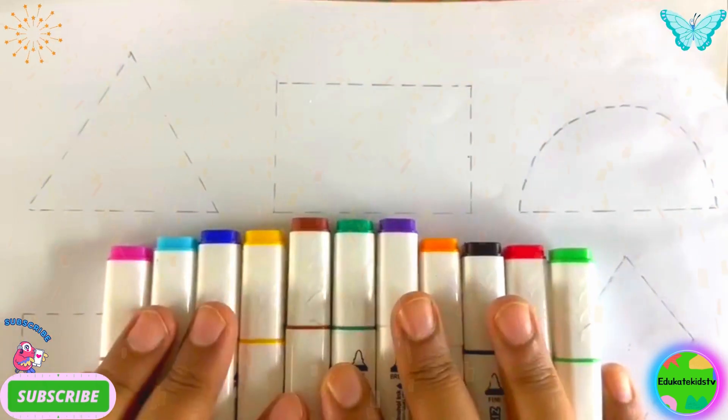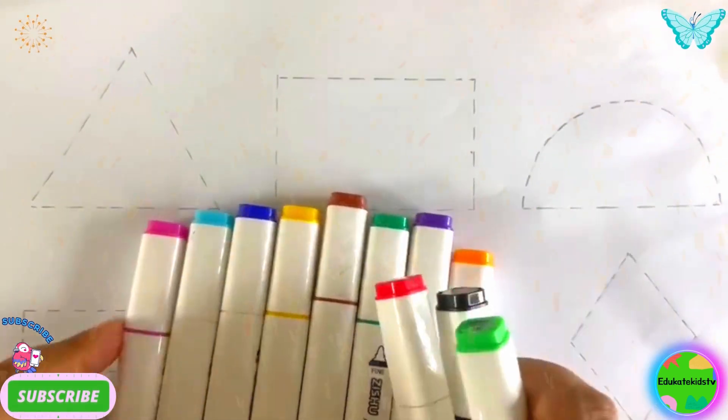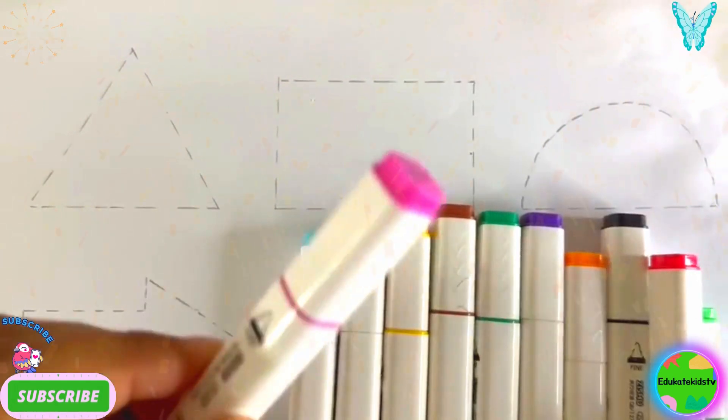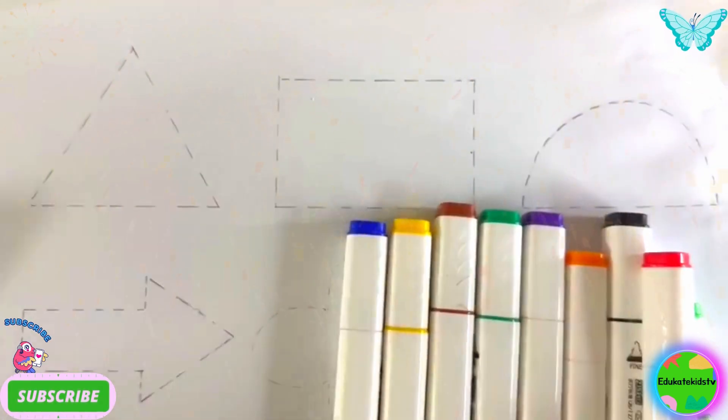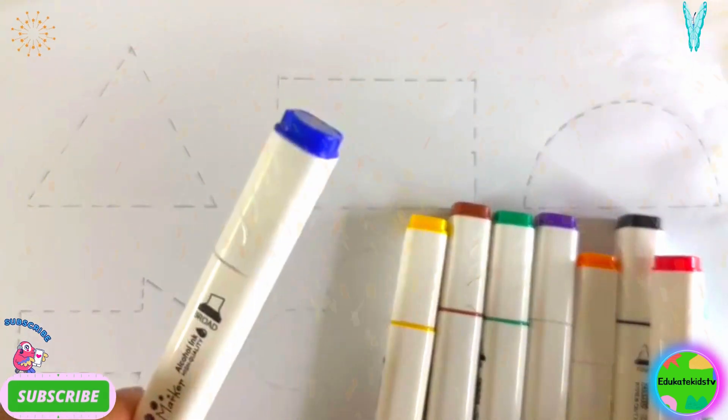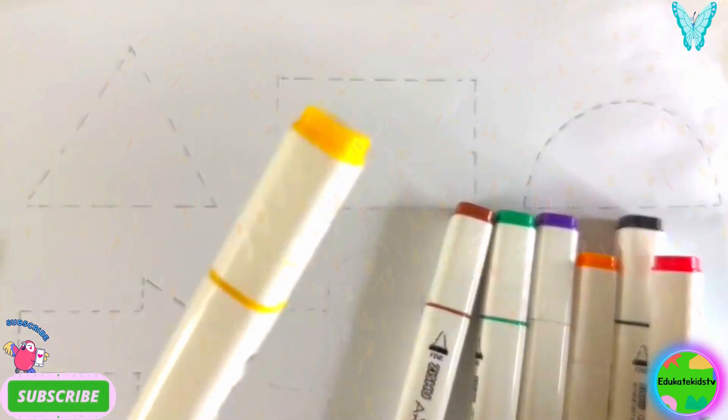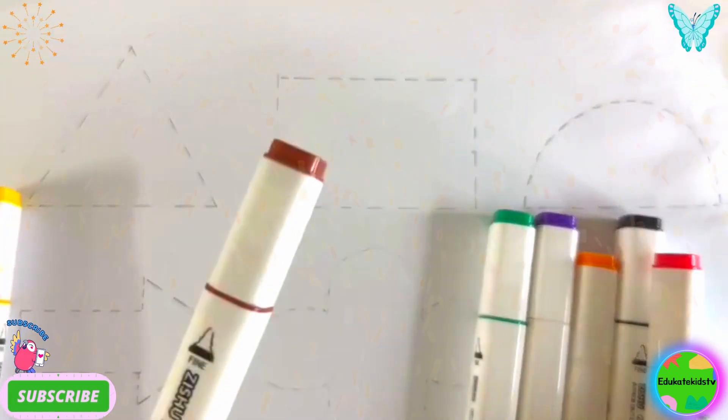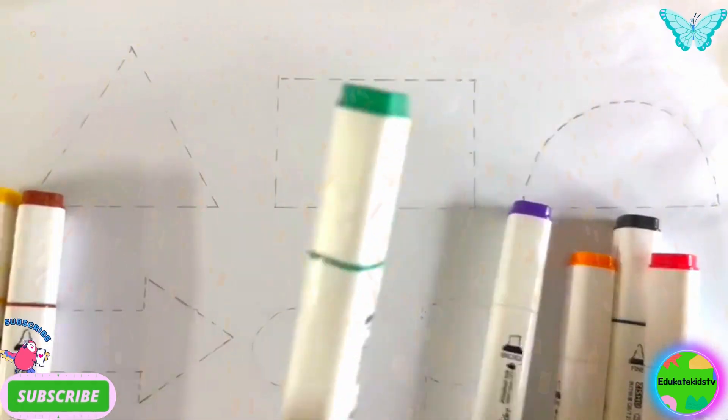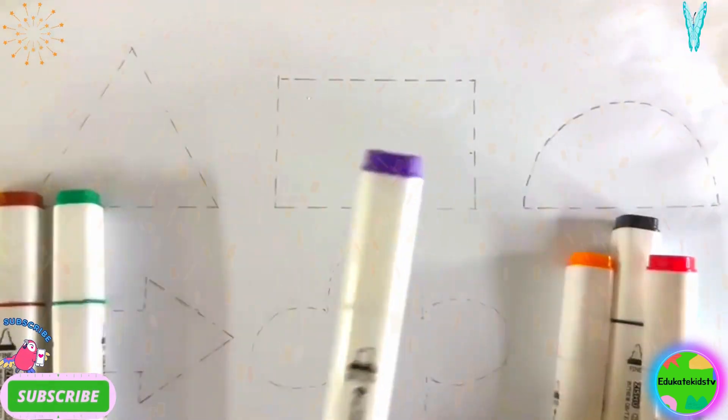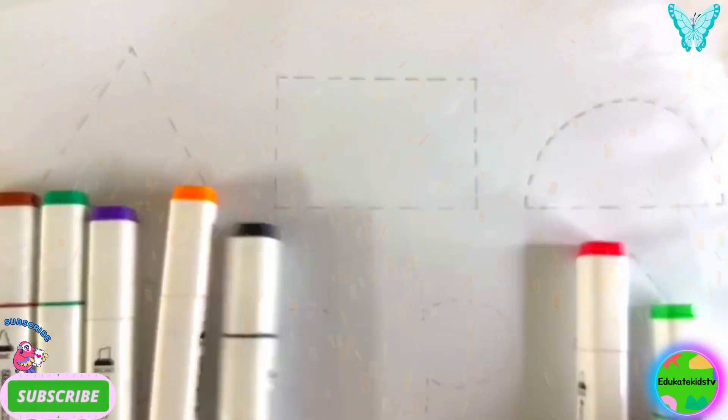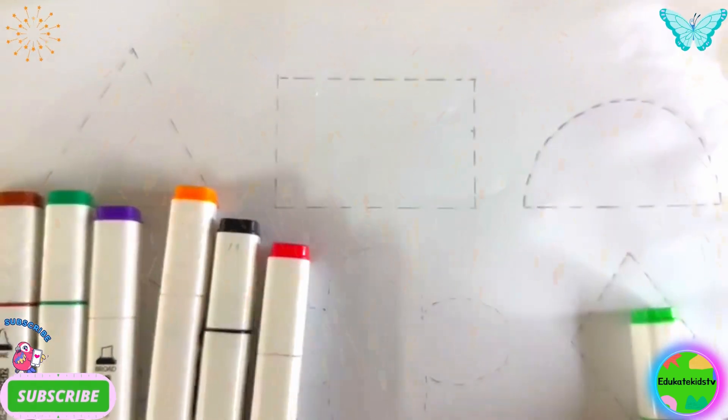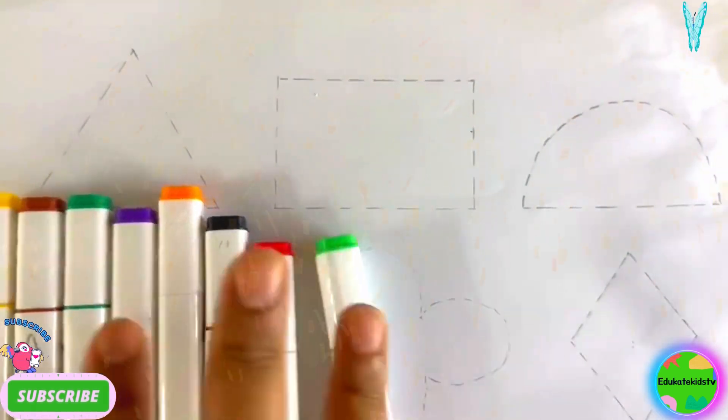Here are some colors. What are they? They are colors. Let's learn them. Pink color, light blue color, dark blue color, yellow, brown, dark green, violet, orange, black, red, light green. We have these colors. Coloring it with me.